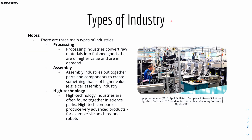Moving on to the types of industry, there are generally three main types. First is processing, where raw materials are converted into finished goods of higher value — for example, turning a piece of wood into a chair. Second is the assembly industry, where parts and components are put together to create something of higher value, for example a car assembly plant. Third is the high-tech industry, where companies are often found in science parks and produce very advanced products such as silicon chips, robots, or things related to AI.